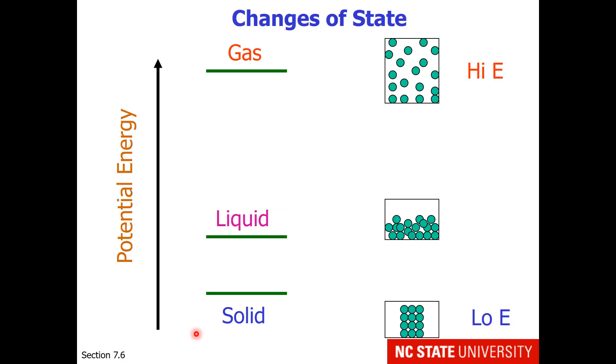This potential energy diagram shows the potential energy of different states of matter for the same substance. The majority of substances obey this particular diagram, where solids are at low potential energy, liquids are slightly higher, and gases are at very high potential energy.